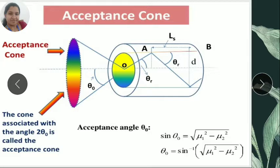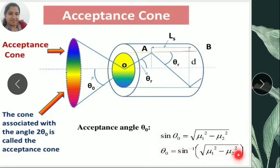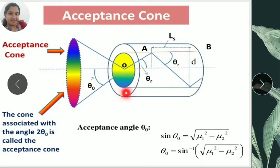This acceptance angle is mathematically represented as theta-zero, where theta-zero equals sine-inverse of the square root of (μ₁² minus μ₂²). Here μ₁ is the refractive index of the core and μ₂ is the refractive index of the cladding. This is the acceptance cone and acceptance angle.